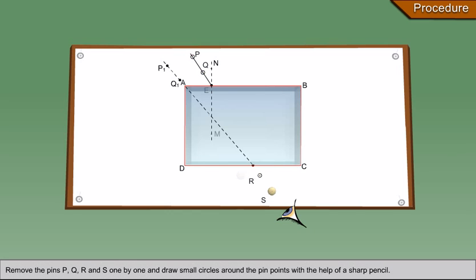Remove the pins P, Q, R and S one by one and draw small circles around the pin points with the help of a sharp pencil.